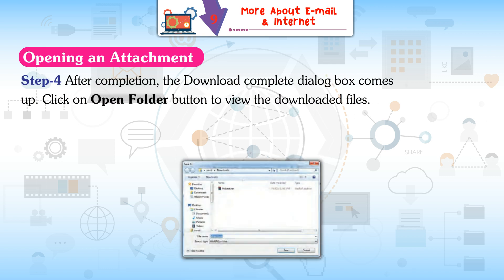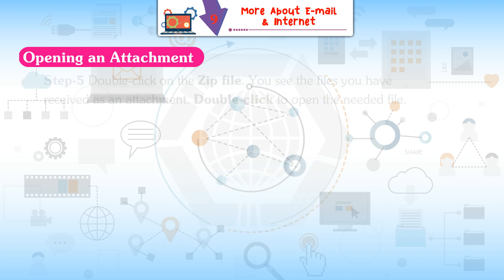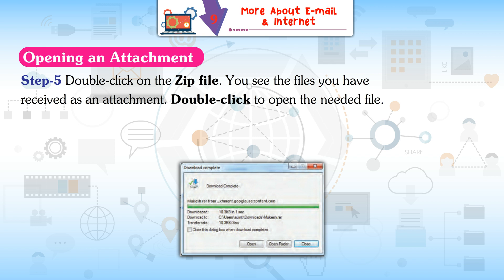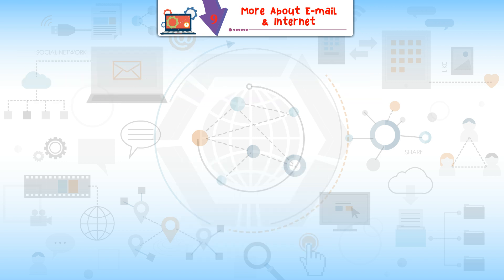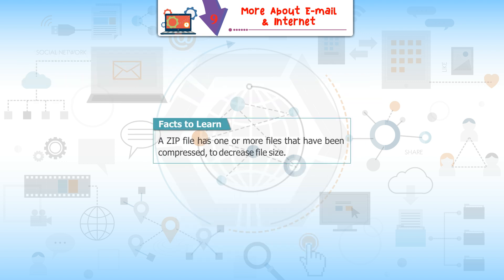Step 4: After completion, the Download Complete dialog box comes up — click 'Open Folder' to view the downloaded files. Step 5: Double-click on the zip file to see the files received as attachments; double-click to open the needed file. Facts to learn: A zip file has one or more files that have been compressed to decrease file size.